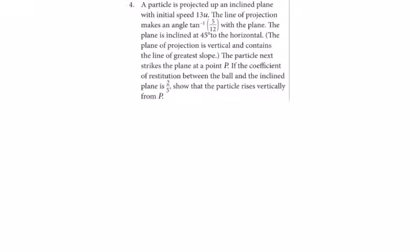In question 4 we have a particle projected up an inclined plane with initial speed 13u. Always sketch your diagram. The line of projection makes an angle inverse tan 5 over 12 with the plane. So in here call this angle A, call this angle B, and B is equal to 45 degrees.